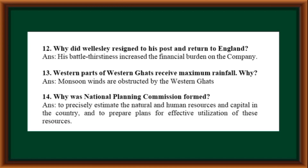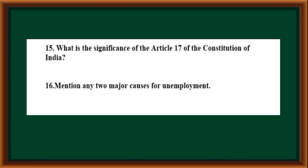Why was the National Planning Commission formed? To precisely estimate the natural and human resources and capital in the country and to prepare plans for effective utilization of these resources. What is the significance of Article 17 of the Constitution of India? It prohibits the practice of untouchability.